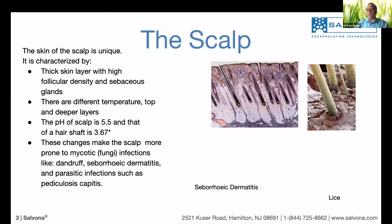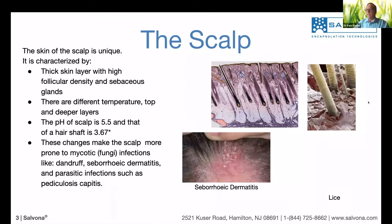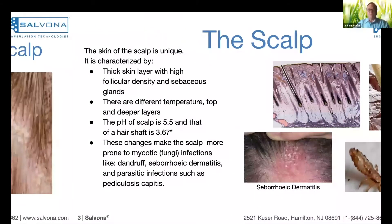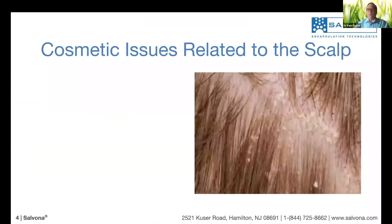This is what differentiates the scalp from regular skin. When we look at the skin from the outside, we see the hair and the skin around it. When the skin is dry, it will typically eventually result in dandruff. Many times people mistake dandruff with other diseases that look like dandruff, like seborrheic dermatitis. Other diseases on the skin include lice.